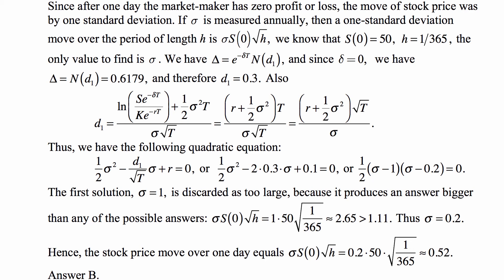So there's two solutions. The first one is σ = 1, and that's too large because it produces an answer bigger than any of the possible answers. So σ is 0.2.